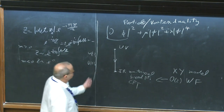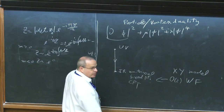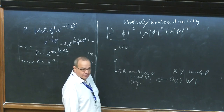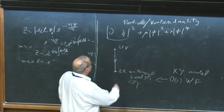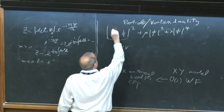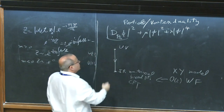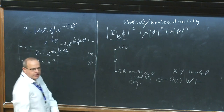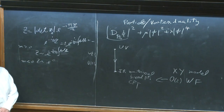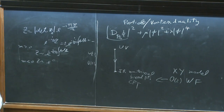In the spirit of these talks, whenever we have a global symmetry we couple it to a background field. I write here a covariant derivative with a background gauge field B, which is not dynamical — it's a classical background field, which allows us to keep track of the global U1 symmetry.